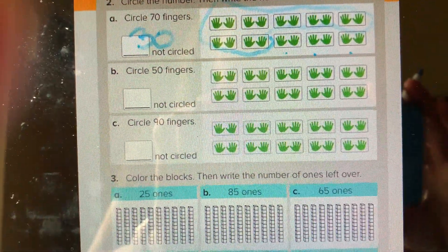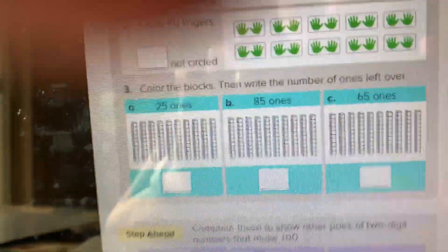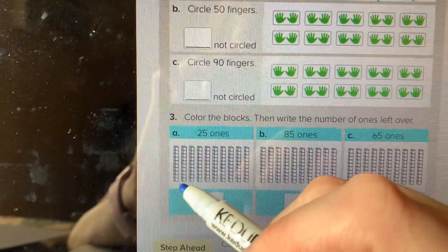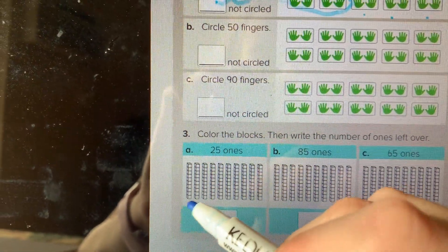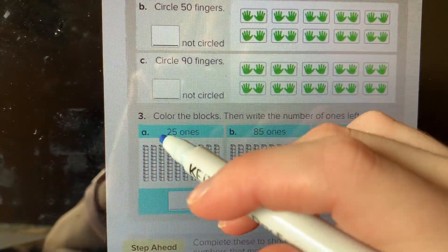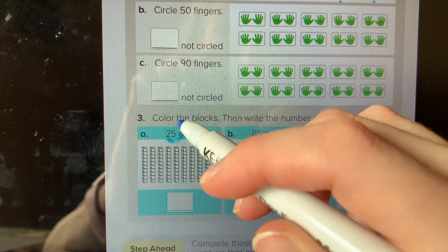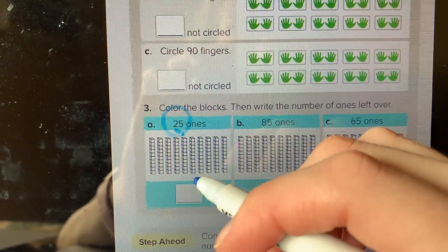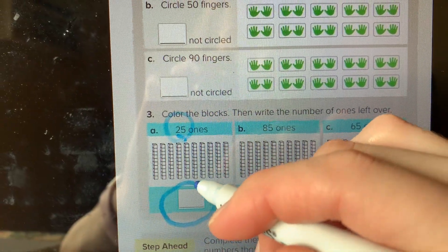You're counting by 10s and then try these: color the blocks. So again you're gonna count by 10s: 10, 20, 30, 40, and it's 100 total. What you're gonna do is you're gonna color in what it tells you. So 25, and then what you're writing here is the ones that aren't colored in.